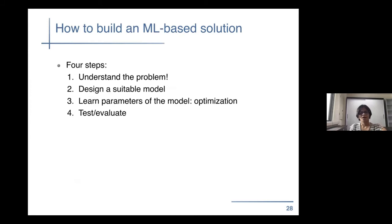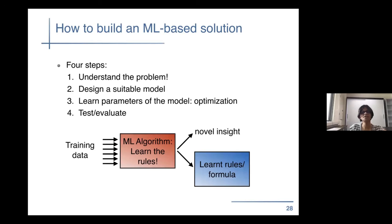So I'll tell you a little bit about some work I did in biology. These are the four general steps that I think are important when you're developing a machine learning based algorithm. We spoke mostly about learning the formula or the rule — and that's of course crucial — but many times you also get novel insights from the machine learning algorithm and the data which you, as a domain expert, might not have known about.